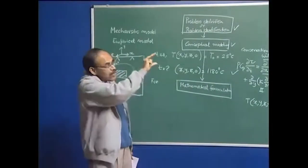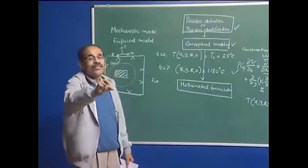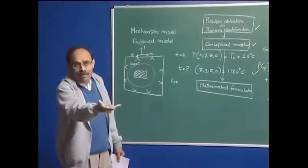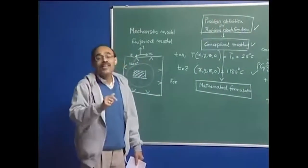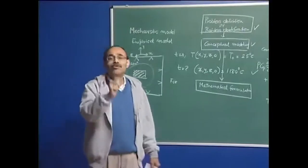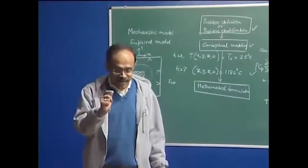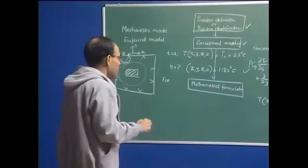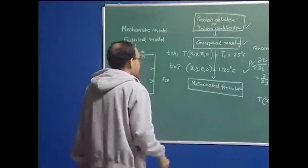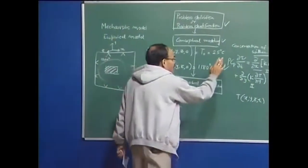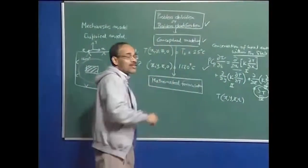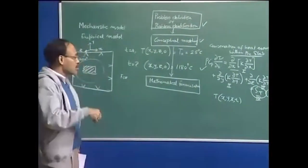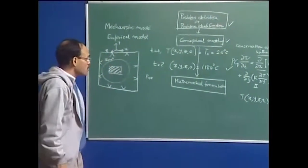Having obtained the fluid flow, I will solve the mass transport equation because dissolution is a mass transport phenomenon, and that is the way we are going to formulate the problem. Once you write the conservation of momentum or fluid flow equation and the conservation of mass transport equation, we will write the boundary conditions and then say yes, we have been able to formulate the dissolution of ferroniobium in steel in a realistic manner.